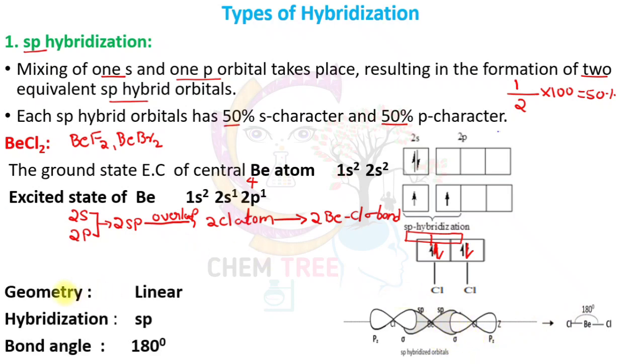By this, we can say the geometry of BeCl₂, or in SP hybridization generally, is linear with a bond angle of 180°.